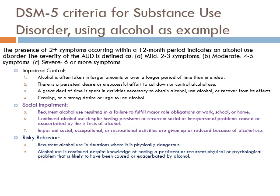Third, the criteria of risky behavior is indicated by number eight: recurrent alcohol use in situations where it's physically dangerous, such as driving a car. Number nine, alcohol use is continued despite knowledge of a persistent and recurrent physical or psychological problem likely caused or exacerbated by alcohol — for example, liver problems or worsening depression — and yet the person continues to drink.